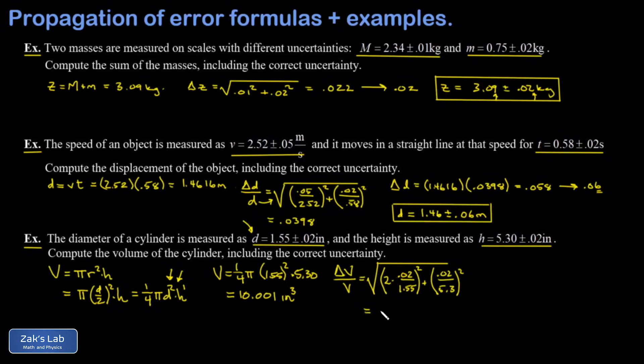And when I run the numbers on that, I get 0.0261. Now again, to solve for the actual uncertainty in V, I need to multiply both sides of this by V itself to isolate delta V.